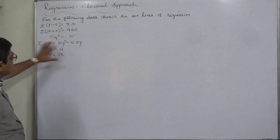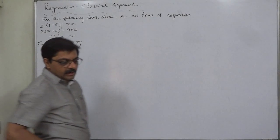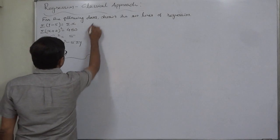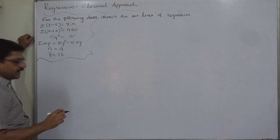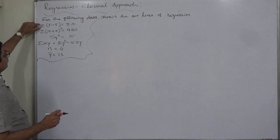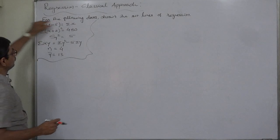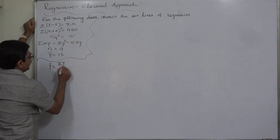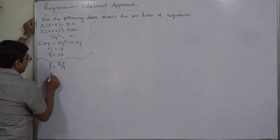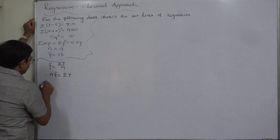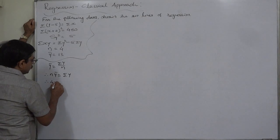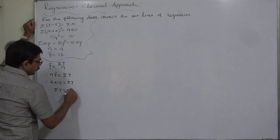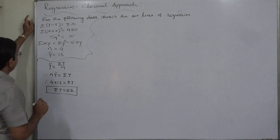We need to find everything from this scattered information. Let's start with the easiest step: finding σy from ȳ. Since ȳ = σy / n, we have n × ȳ = σy, that is 4 × 13 = σy, so σy = 52.